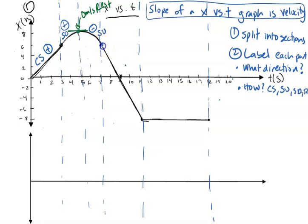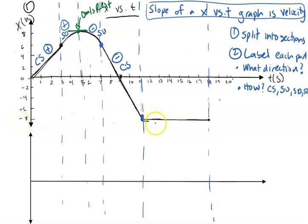Now let's look at the next portion. It looks like you go from six meters all the way back to negative eight meters on the number line, so you're moving in a negative direction at a constant speed. Then from 11 seconds to 18 seconds, you're at negative eight meters the whole entire time — so you're just at rest, and there's no direction to assign since you're not moving either way.